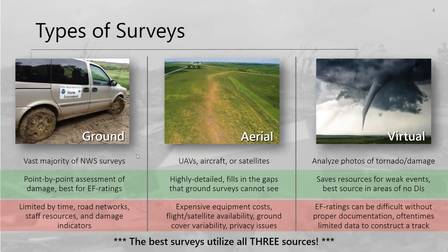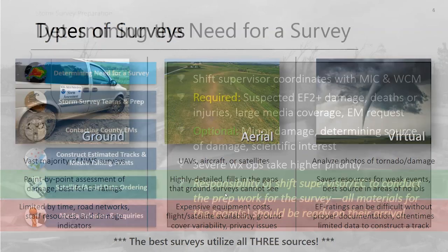The types of surveys we do are primarily ground surveys, which are best for determining EF ratings but limited by road networks and available damage indicators. Aerial surveys — Civil Air Patrol flights for 70 years, and now high-resolution satellites and UAVs — are a game changer. Virtual surveys use photos and video to piece together what happened, best reserved for weak events or those with limited damage indicators. The best surveys leverage all three sources.